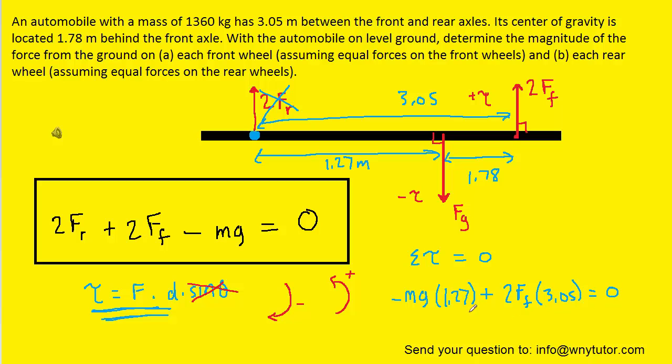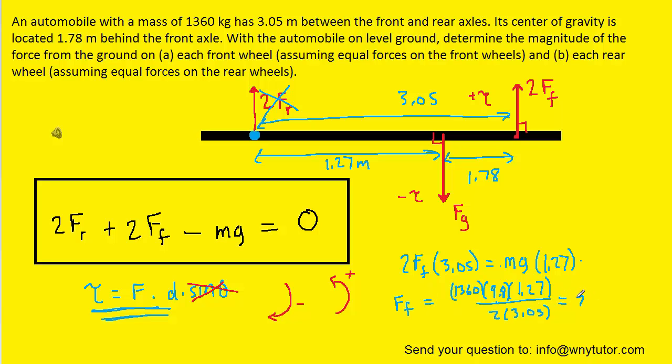Why don't we add the mg times 1.27 over to the right-hand side. And then we can divide both sides by 2 times 3.05 to solve for Ff. The mass of the car was given as 1360 and g is 9.8. And when we compute that we should get roughly 2.77 times 10 to the third Newtons.